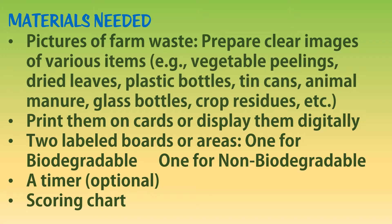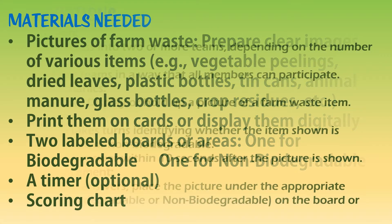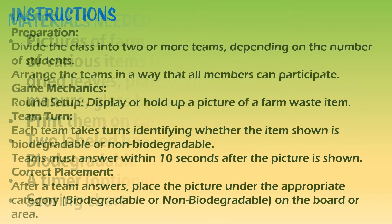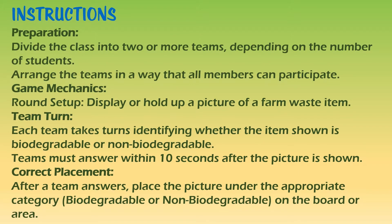A timer is optional, and prepare a scoring chart. For the game instructions: divide the class into two or more teams depending on the number of students, and arrange them so all members can participate. Display or hold up a picture of a farm waste item — each team takes turns identifying whether the item is biodegradable or non-biodegradable. Teams must answer within 10 seconds. Place the picture under the appropriate category on the board. The team with the most correct answers in the shortest time wins!